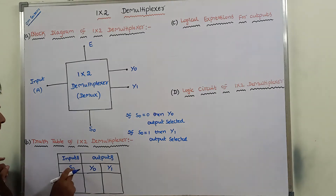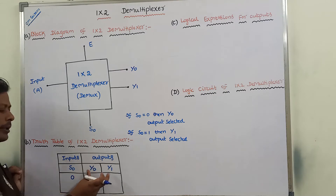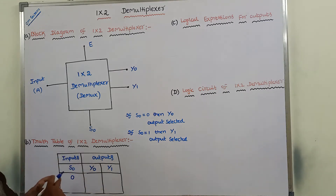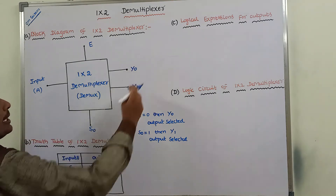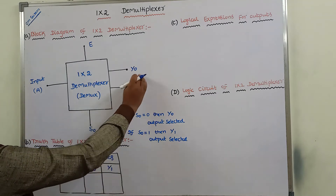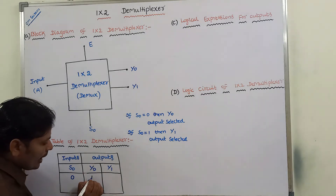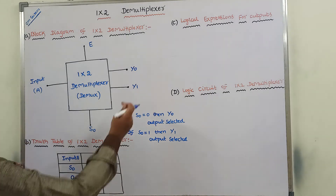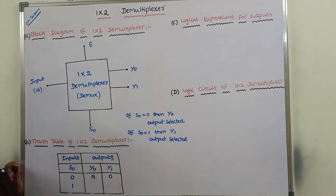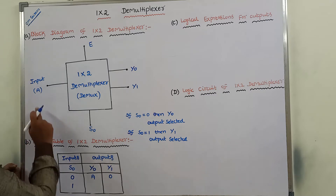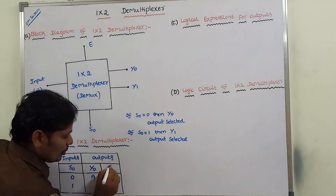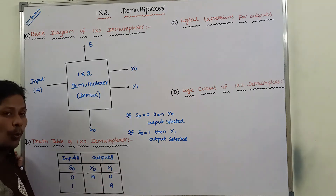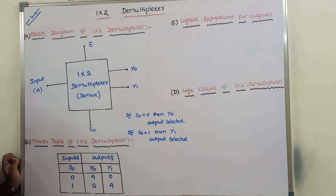If S0 value is equal to 0, Y0 output is selected, so the input line A is connected to output line Y0. At Y0 we write A, and the remaining Y1 value is 0. If S0 value is equal to 1, Y1 output is selected — the second output — so the input line A is connected to Y1. At Y1 we write A, and the remaining Y0 value is 0.